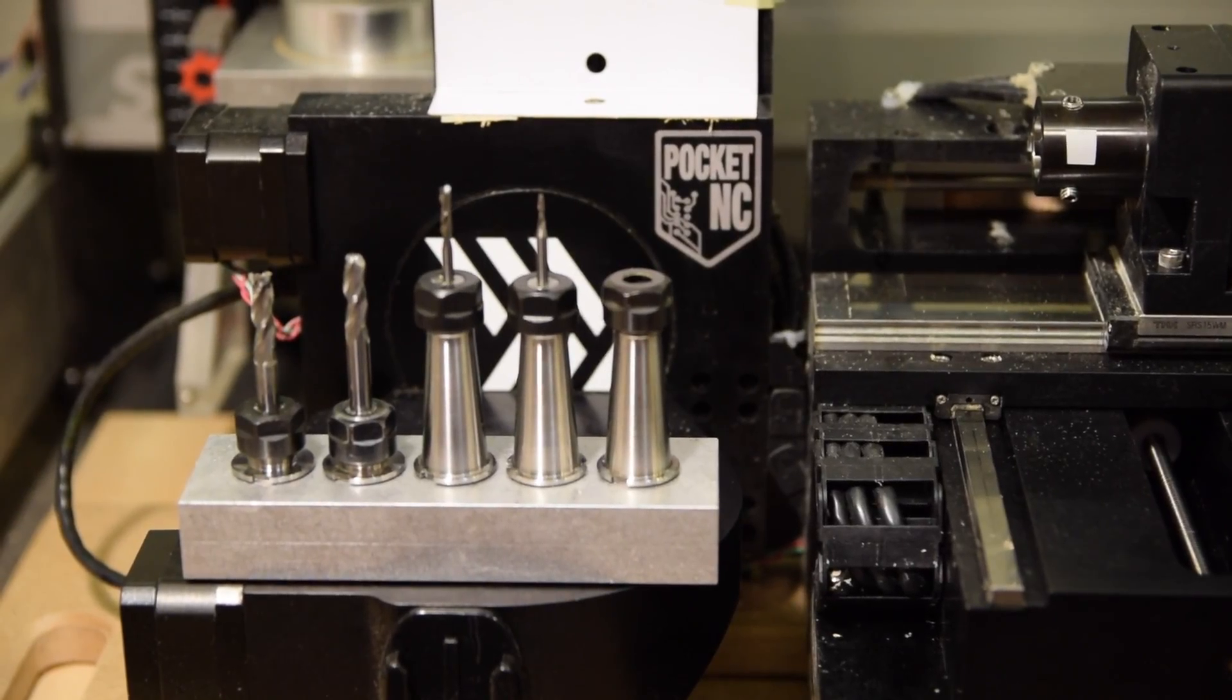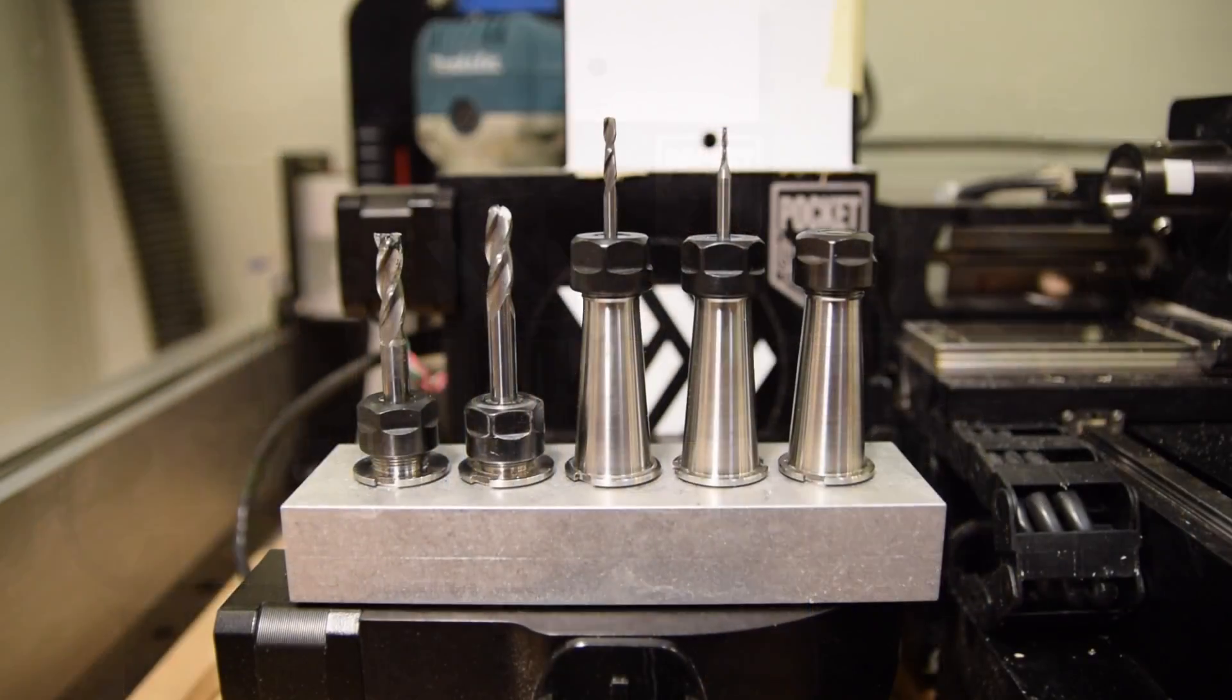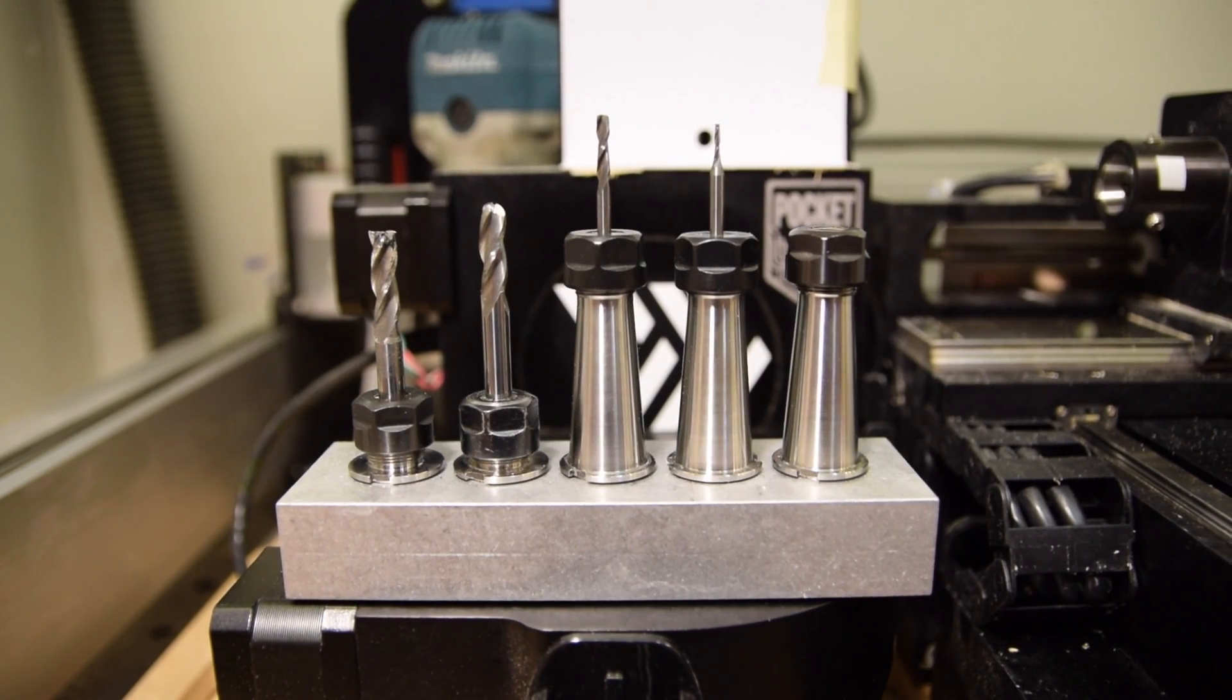Hello guys, Winston here. One of the nice things about the Pocket NC if you're machining something with multiple end mills is the fact that it uses a tool holder system.